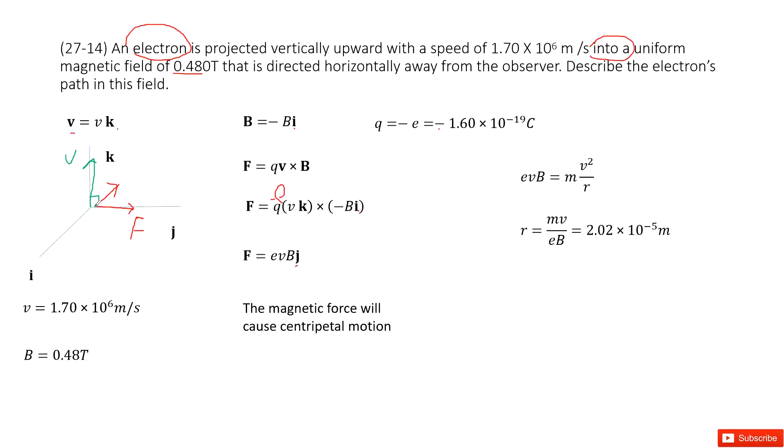So the magnetic force will become the centripetal force. It will make the electrons do the circular motion.